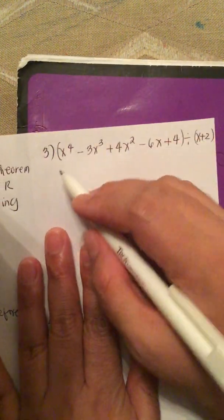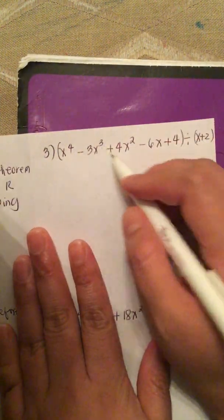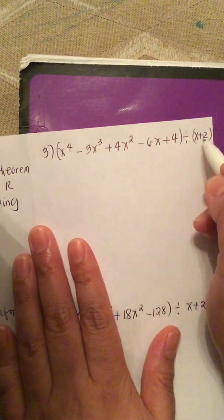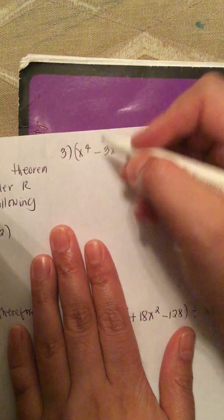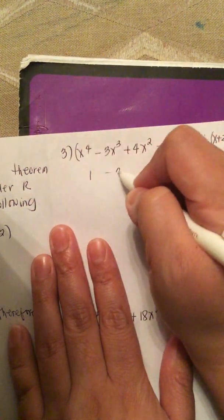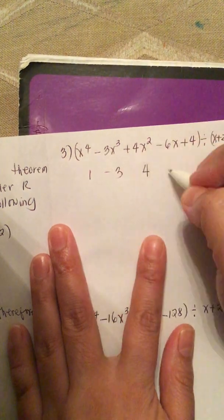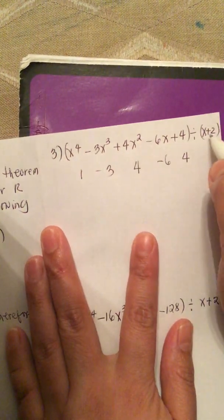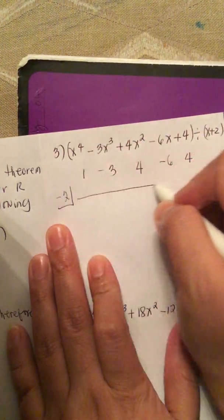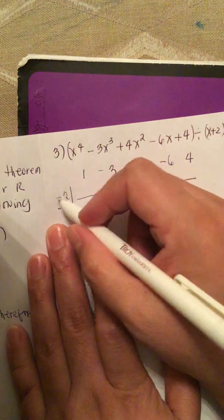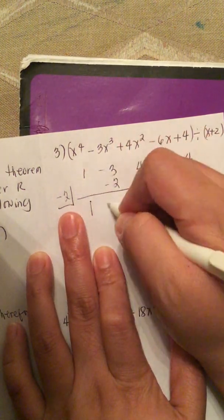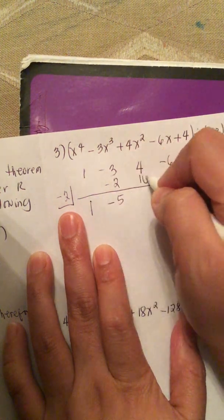Next problem: x to the 4th minus 3x cubed plus 4x squared minus 6x plus 4, divided by x plus 2. We list all the coefficients: 1, negative 3, 4, negative 6, and 4. The root is negative 2. We bring down the 1. 1 times negative 2 is negative 2, giving negative 3 plus negative 2 equals negative 5. Then negative 5 times negative 2 is positive 10.